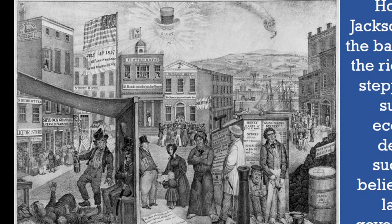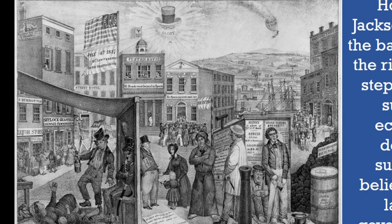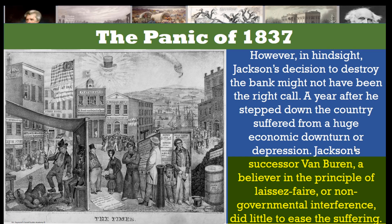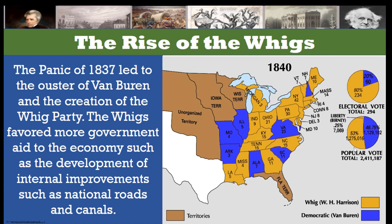However, in hindsight, Jackson's decision to destroy the bank might not have been the best call. A year after he stepped down from the presidency, the country suffered a huge economic downturn, or depression. Jackson's successor, President Martin Van Buren, a believer in the principle of laissez-faire or non-governmental interference, did little to ease the suffering. This became known as the Panic of 1837. The Panic of 1837 led to the ouster of Van Buren after only one term and the creation of the Whig Party.